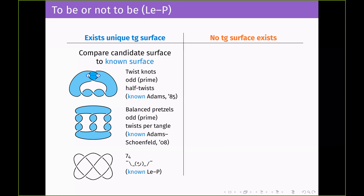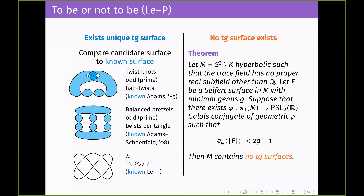For the absence side, we have this theorem: if you have a hyperbolic knot complement where the trace field has no proper real subfield other than ℚ, and you have the Seifert surface with minimal genus, and there exists a representation from the fundamental group into PSL(2,ℝ) that is a Galois conjugate of your geometric map, such that the absolute value of the Euler class with respect to that map of the Seifert surface is less than 2g minus 1, then your manifold doesn't contain any totally geodesic surfaces. The words 'odd prime' keep showing up in the existence column, while the trace field appears in the absence theorem — and those two ideas are connected very tightly.